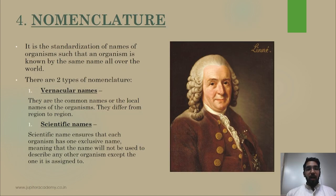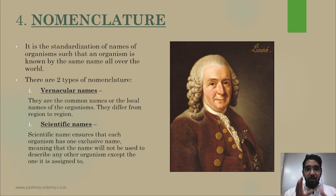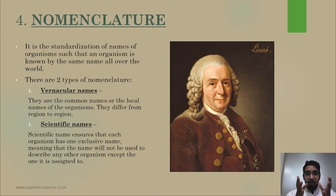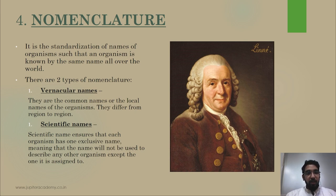We have come to the last point of this class: nomenclature — the naming of an organism. There are two types of naming: the vernacular name (local or regional name) and the scientific name. Scientific names are exclusive — a particular name is given to one particular organism and is not given to any other. Scientific names ensure that each organism has one exclusive name not used for any other organism.